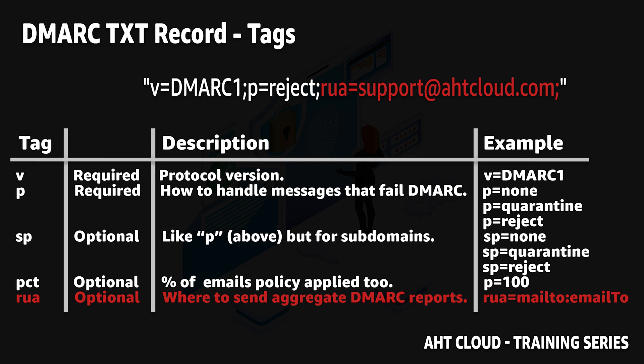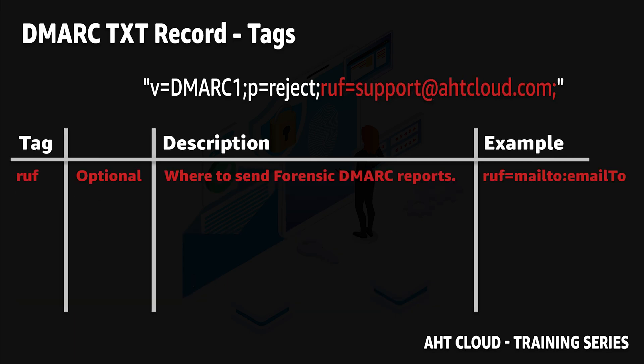The rua tag is also an optional tag. It allows you to specify an email address or addresses to receive the DMARC aggregate feedback reports. I cannot emphasize how important it is to have this field set up — even if your domain does not send emails, you should always set this record so you can get insights into domain spoofing or phishing attacks that impersonate your domain. You can specify multiple emails by separating them with a comma.